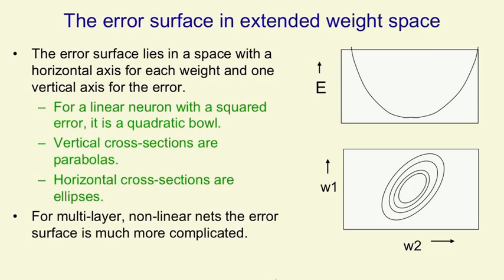For a linear neuron, the errors that you make for each set of weights define an error surface, and this error surface is a quadratic bowl. That is, if you take a vertical cross-section, it's always a parabola, and if you take a horizontal cross-section, it's always an ellipse.